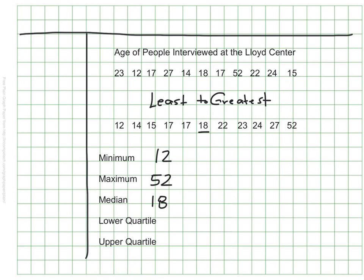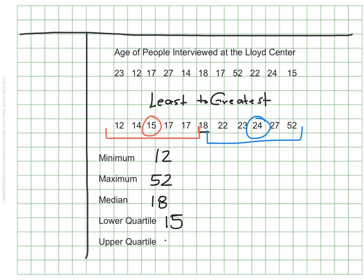Now let's find the lower quartile. We find the lower quartile by finding the midpoint of the lower half of the data. Looking at those numbers, the lower quartile is 15. For the upper quartile, I look at the upper half of the data and find the middle number — the upper quartile is 24.